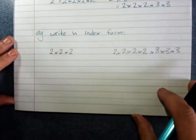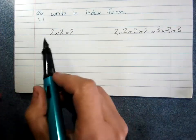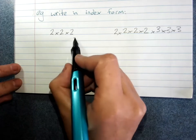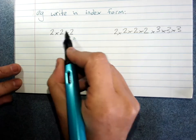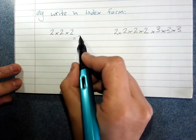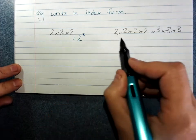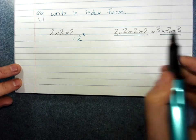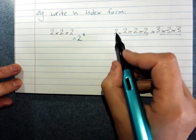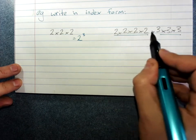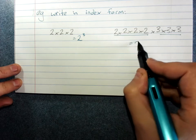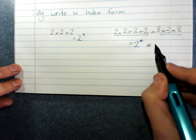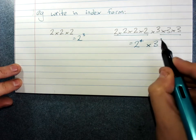We also need to be able to write from expanded form into index form. For example, 2 times 2 times 2 is 2 cubed. And here we've got two different numbers: 2 times 2 times 2 times 2 times 2 is 2 to the power of 4, times 3 cubed.